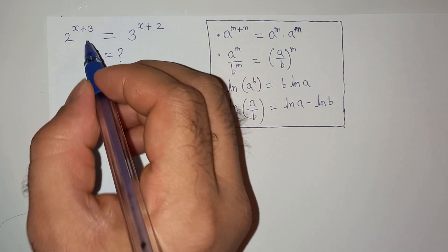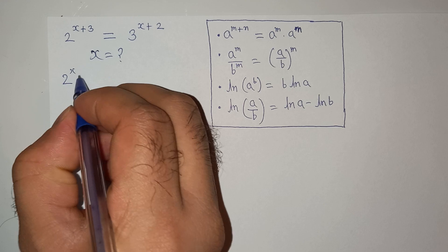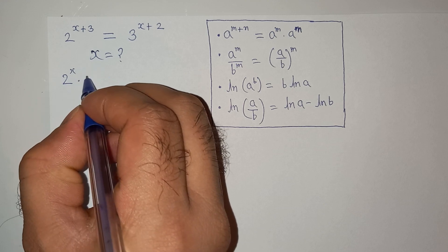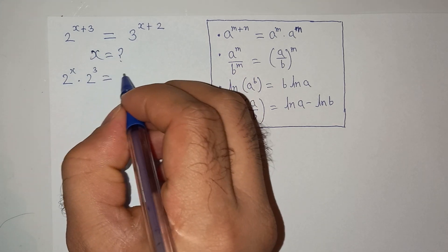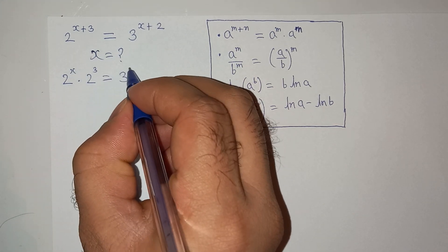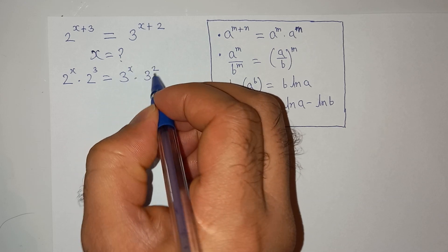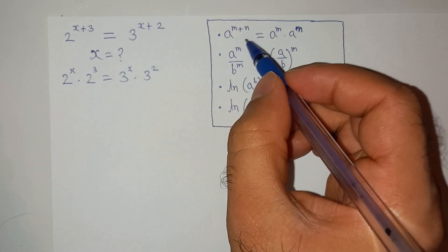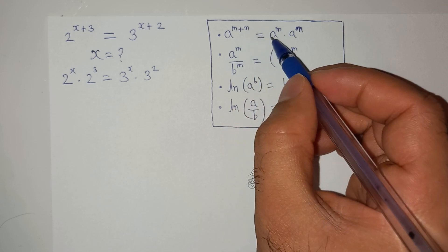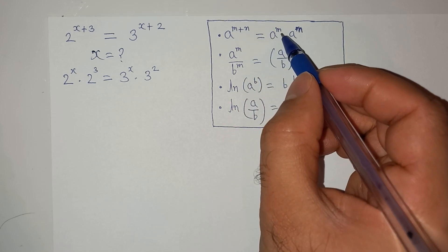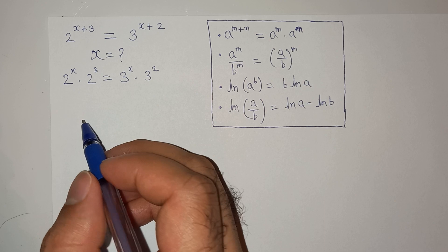We can write the left hand side as 2 power x multiplied by 2 power 3, equals to 3 power x multiplied by 3 power 2. This follows the exponential rule: a power (m+n) equals a power m multiplied by a power n.